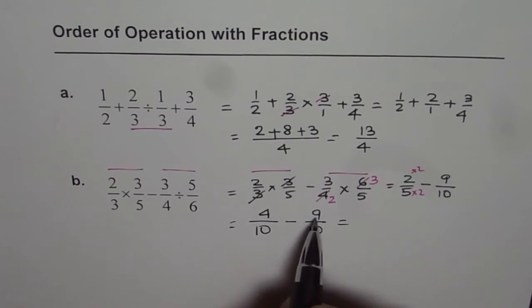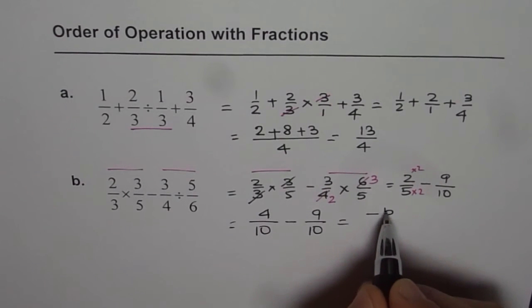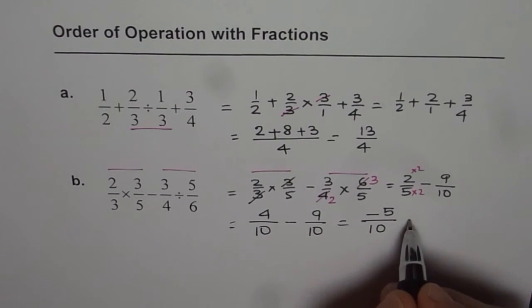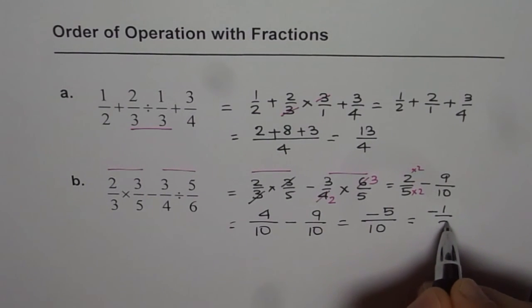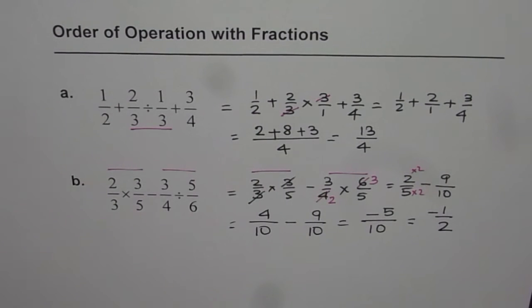Now, what is four minus nine? Four minus nine is negative five. We get negative five over ten. This can be simplified. You can divide both by five, giving us minus one over two. So minus half is the answer for part b.